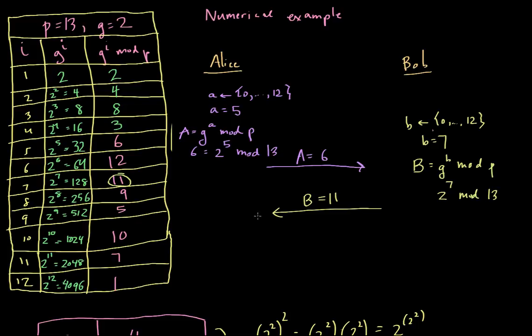Alice has to compute, and she gets uppercase B, and she computes B to the a mod p. Now, in this case, B is 11. We can also think of B as 2 to the 7, right? Since we computed there, 2 to the 7 mod p. And then she's going to raise that to the a power, and a is 5. So she gets 2 to the 35th mod p, or in this case, mod 13.